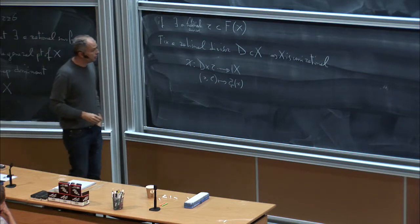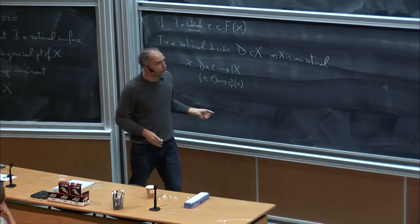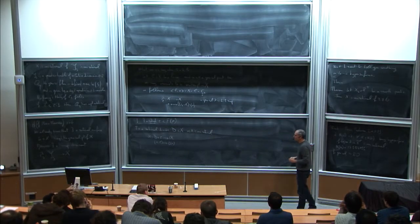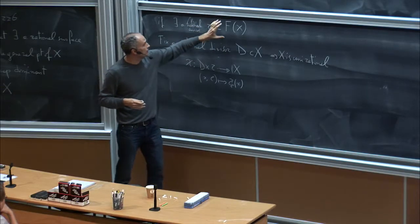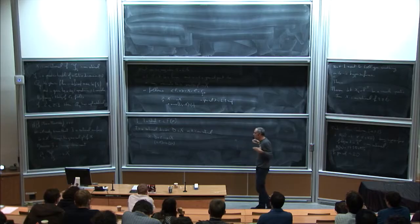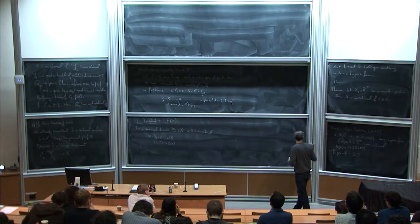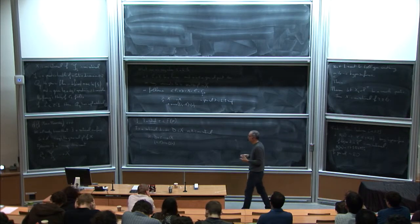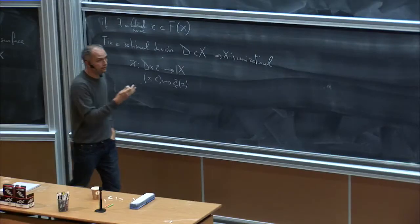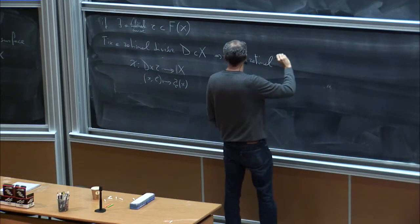In dimension four, when r equals four, all quartic threefolds of this type are singular, because having a line in F(X) is equivalent to the quartic containing a ruled surface, and there is no way to get it smooth when plugging a ruled surface into a quartic threefold. But in dimension five, this gives examples of smooth unirational quartics in P5.